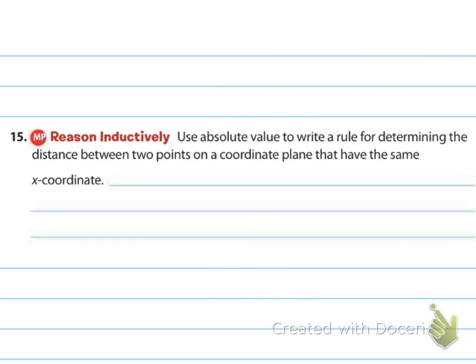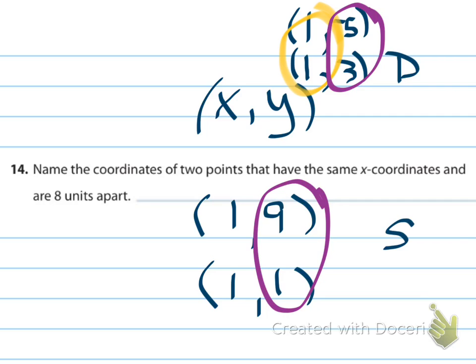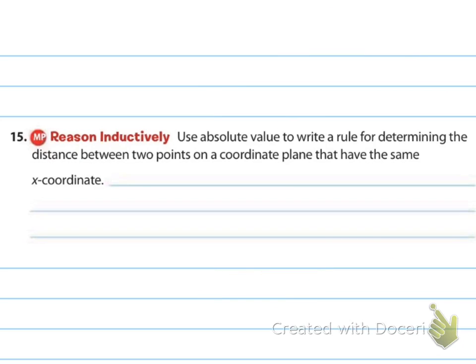Number fifteen: use absolute value to write a rule for determining the distance between two points on a coordinate plane that have the same x-coordinate. If they're in different quadrants, you find the absolute value of each y-value and add them together. That's the rule.